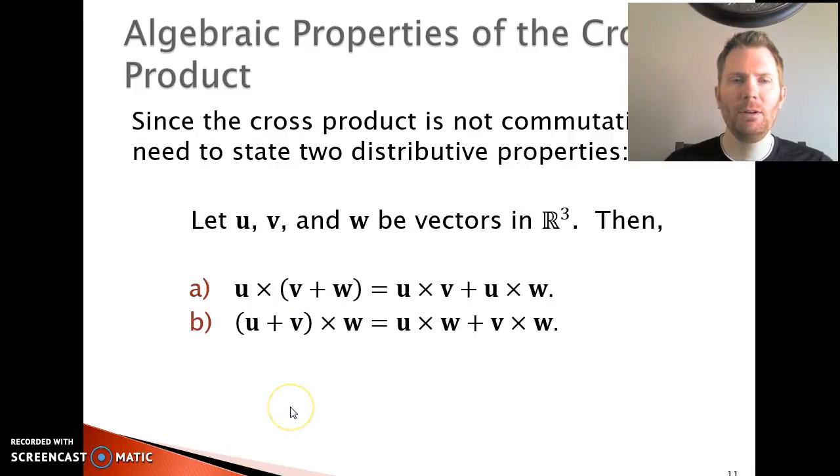Here are two distributive properties since the cross product is not commutative. For three vectors u, v, and w, u cross (v + w) is equal to u cross v plus u cross w. Or if you want to do the addition of (u + v) and then cross it with w, it's the same thing as u cross w plus v cross w. So keeping that order is very important.